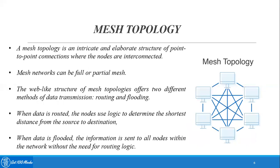Next, let's discuss mesh topology. A mesh topology is an intricate and elaborate structure of point-to-point connections where nodes are interconnected. Mesh networks can be full or partially meshed — meaning all systems could be completely interconnected with each other, or only a few systems can be interconnected. The web-like structure of mesh topology offers two different methods of data transmission: routing and flooding.